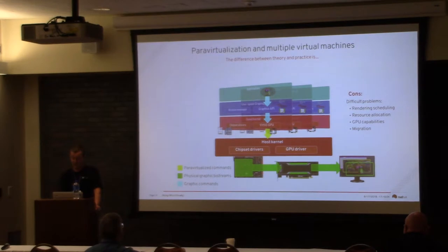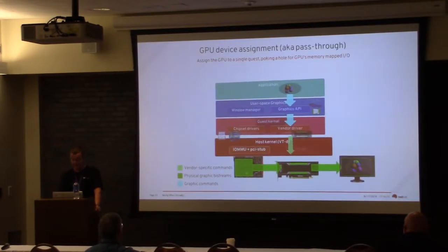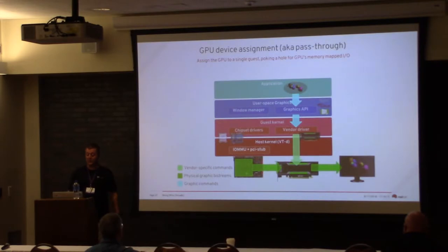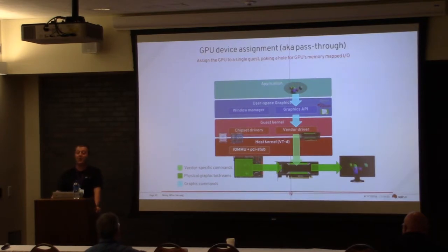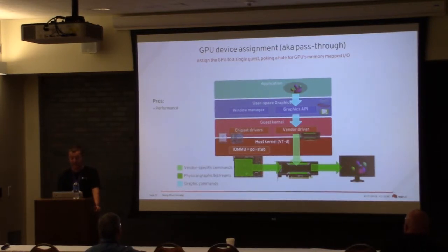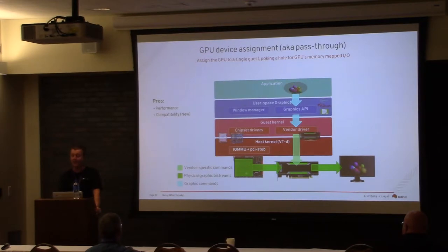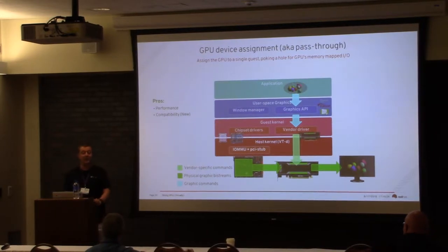The next step to get better performance is GPU device assignment. In that case, you pass through the graphics API directly to a vendor driver that resides in the guest, and it talks directly to the hardware via vendor-specific commands — you're poking a hole through the virtualization layer. The safety issues can be somewhat mitigated. The pros are near-native performance in the best case, good compatibility with new features, and you get the latest APIs and best graphic features.